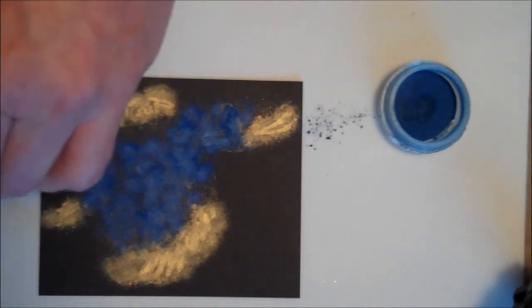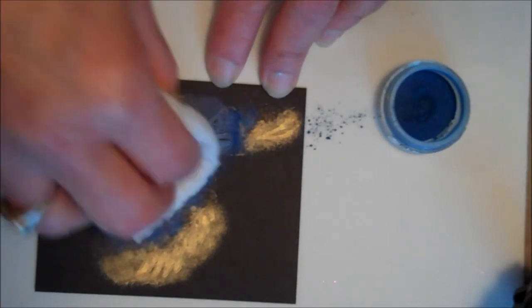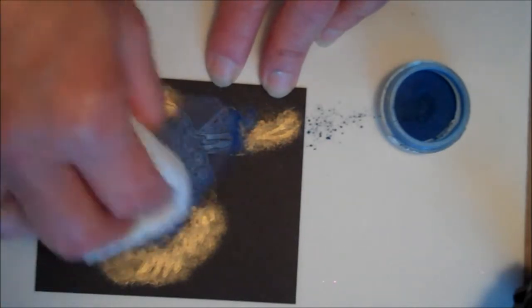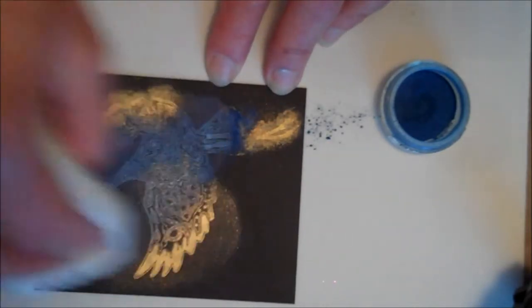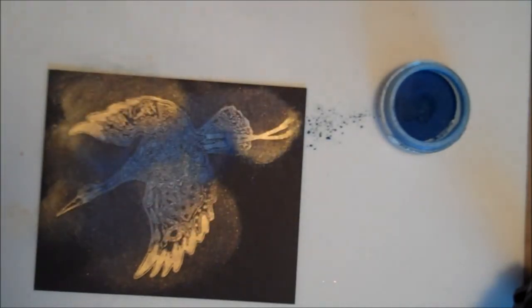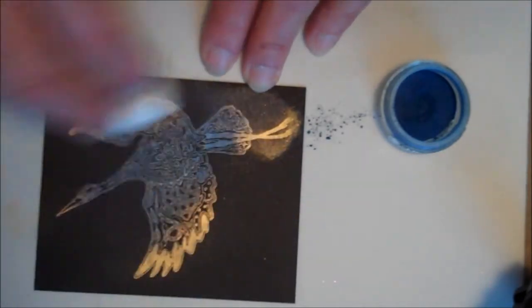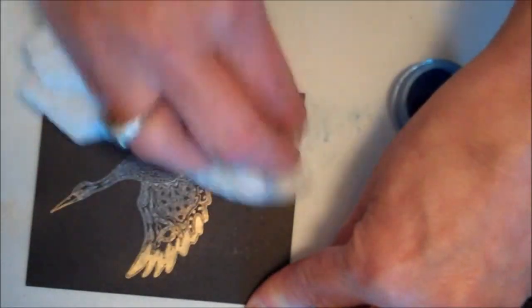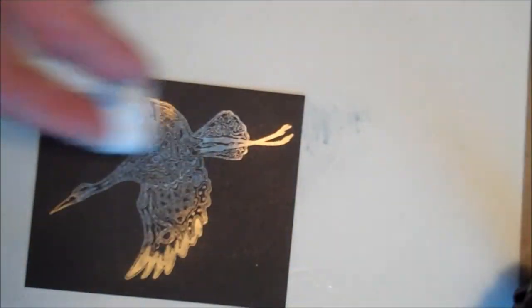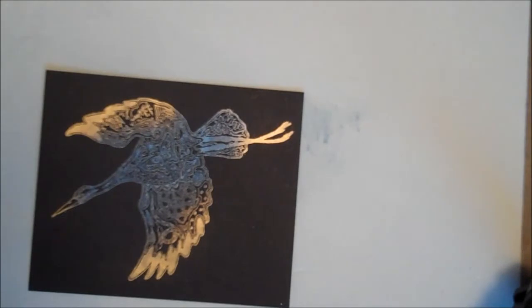The next thing we're going to do is rub it with a Swiffer pad, gently. Make sure you use a clean one, not the one used on your floor. What it will do is pick up any excess. You can see it happening in the camera. Oh, that's very nice. You're even getting it off the foam pad. And there you go.